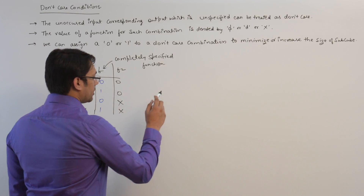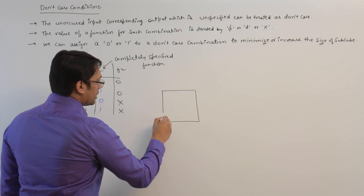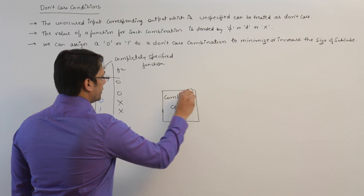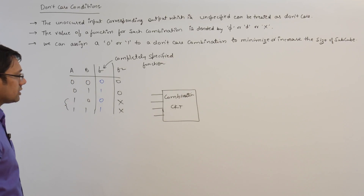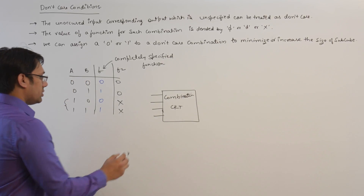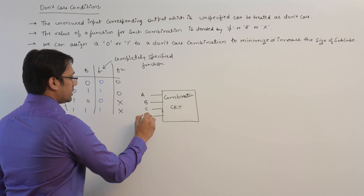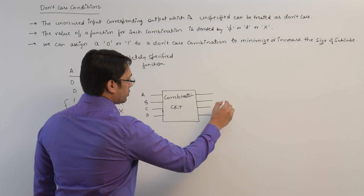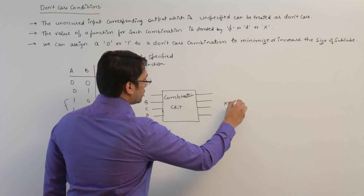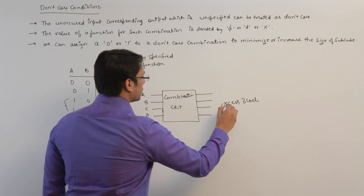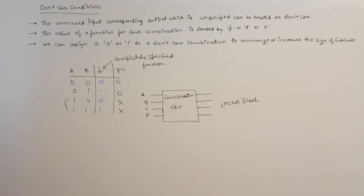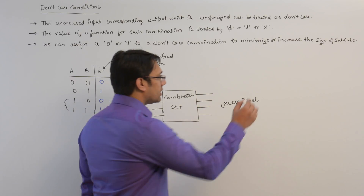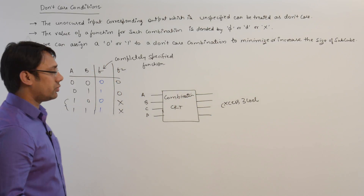For example, assume we want to make a circuit. This is a combinational circuit that is going to take some numbers as input — bits A, B, C, and D — and give some bits as output, and those output bits are the XS3 code. In this case we may have some combinations which are not completely specified. For example, A B C D is an 8421 code.